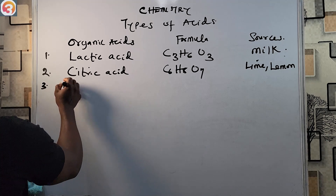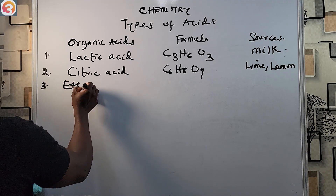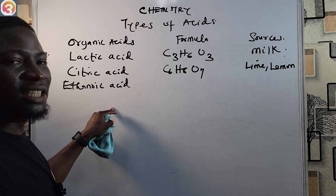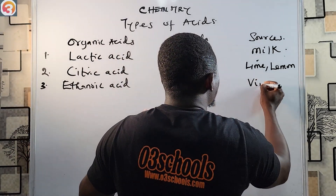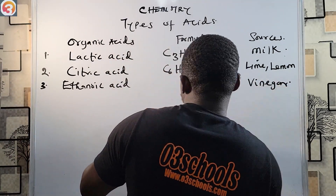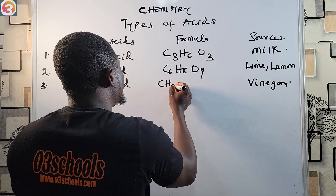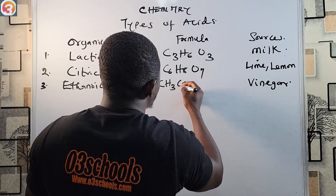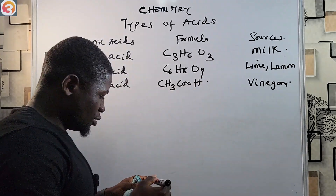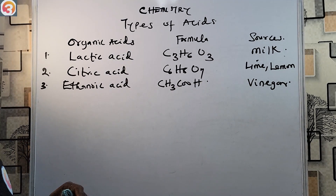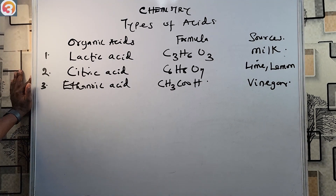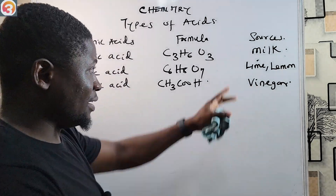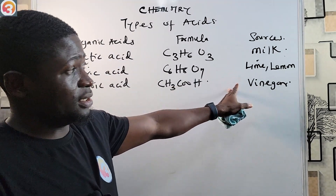Number three: ethanoic acid. Ethanoic acid is gotten from vinegar, and its chemical formula is CH₃COOH.